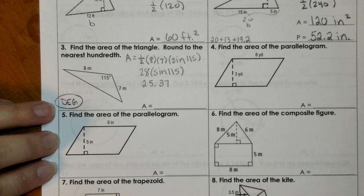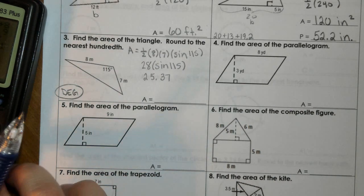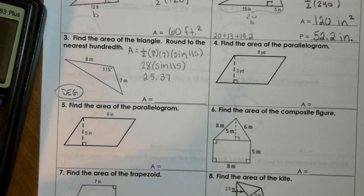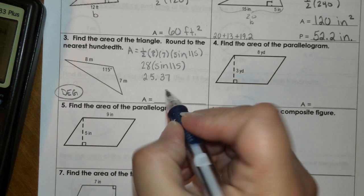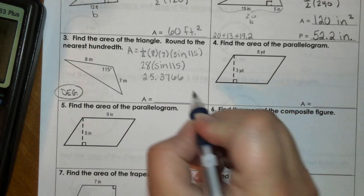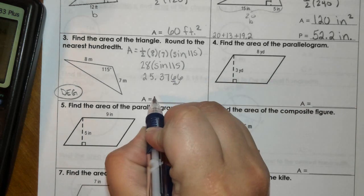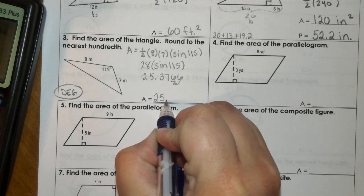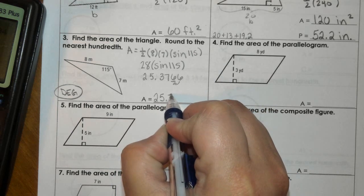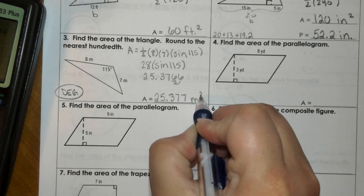And that would give you 25.37. Since it says round to the nearest hundredth, that 6 would make that go up to 7. So 25.377 meters squared.